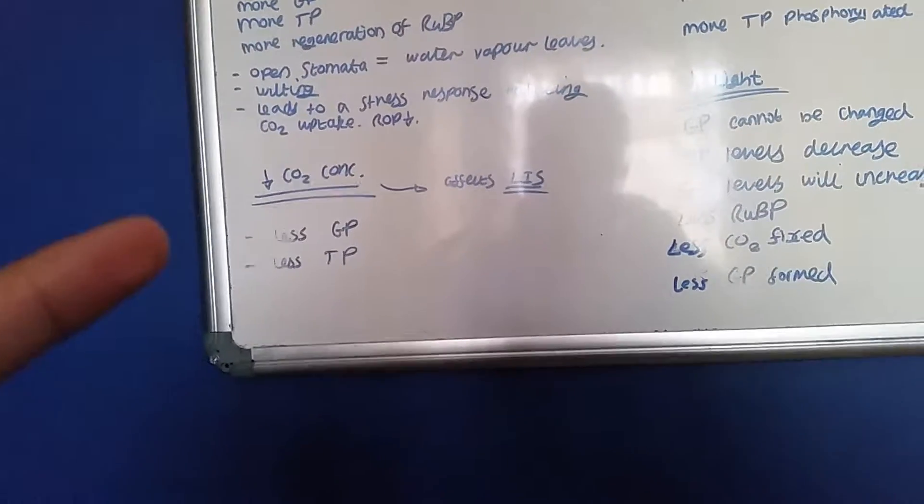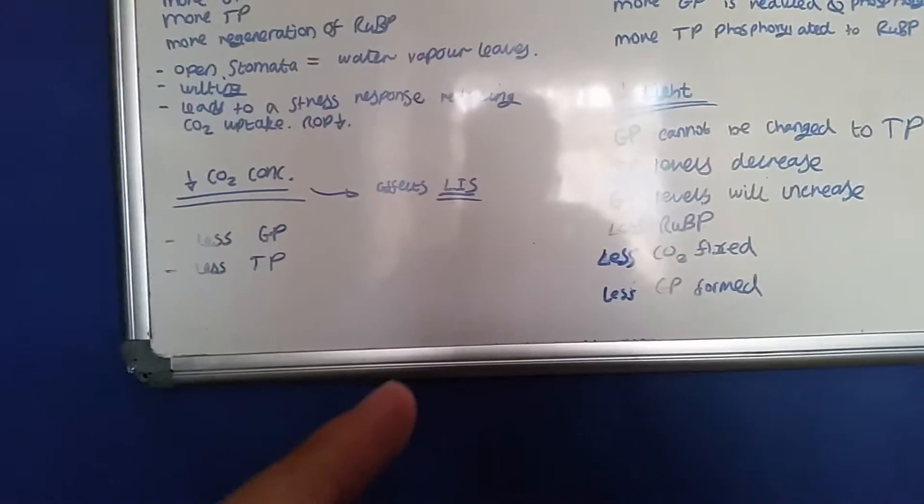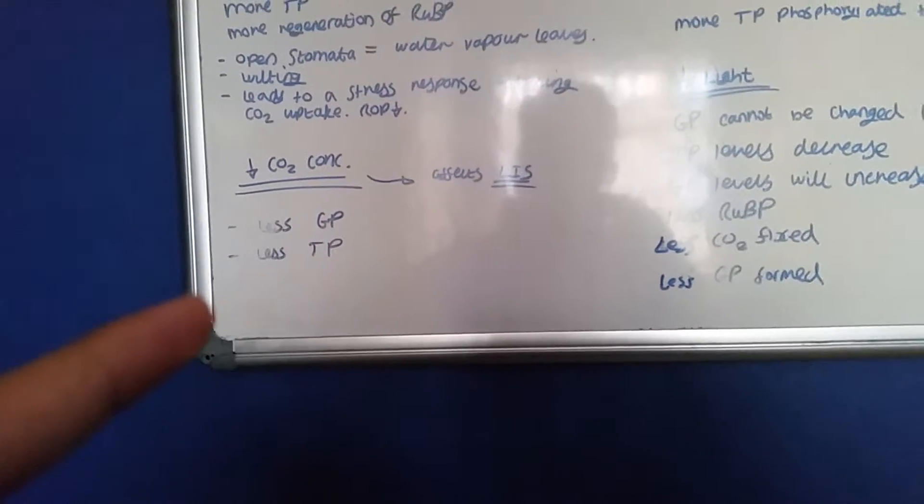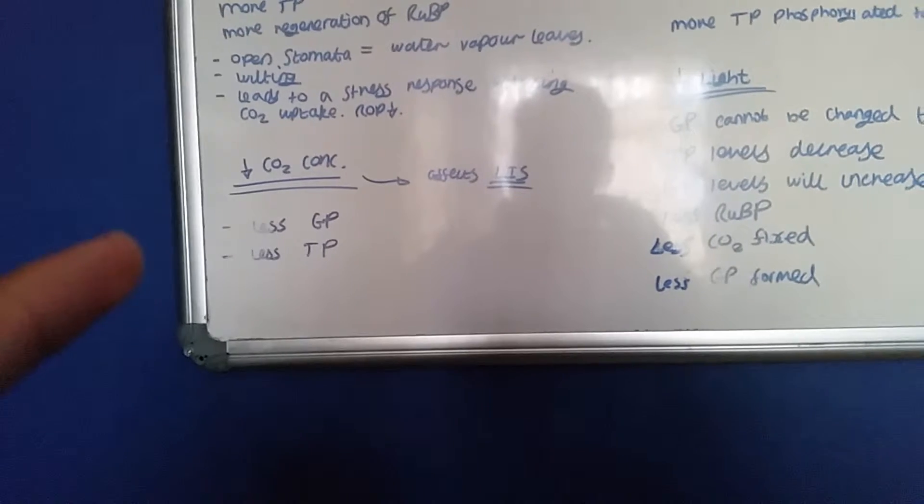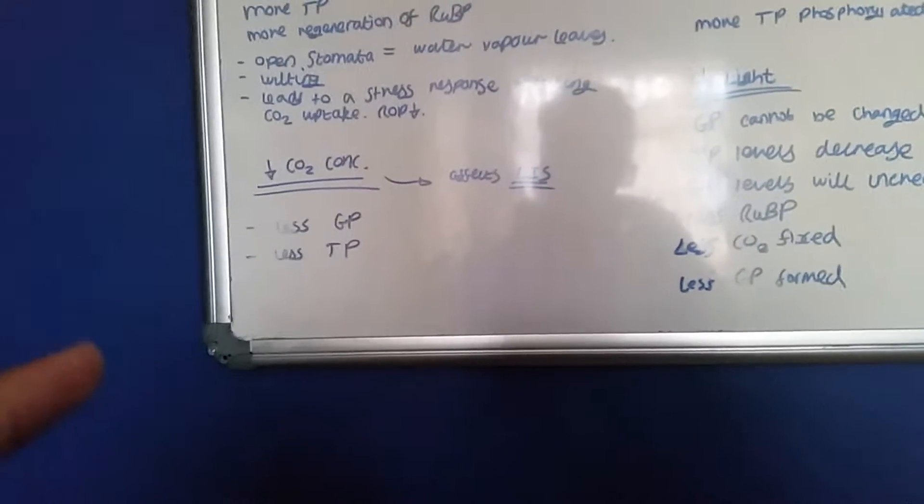If there is a low CO2 concentration, this is affecting the light independent stage. So there will be less CO2 fixation. Hence, less GP will be made, less TP will be made, and less regeneration of IUB.